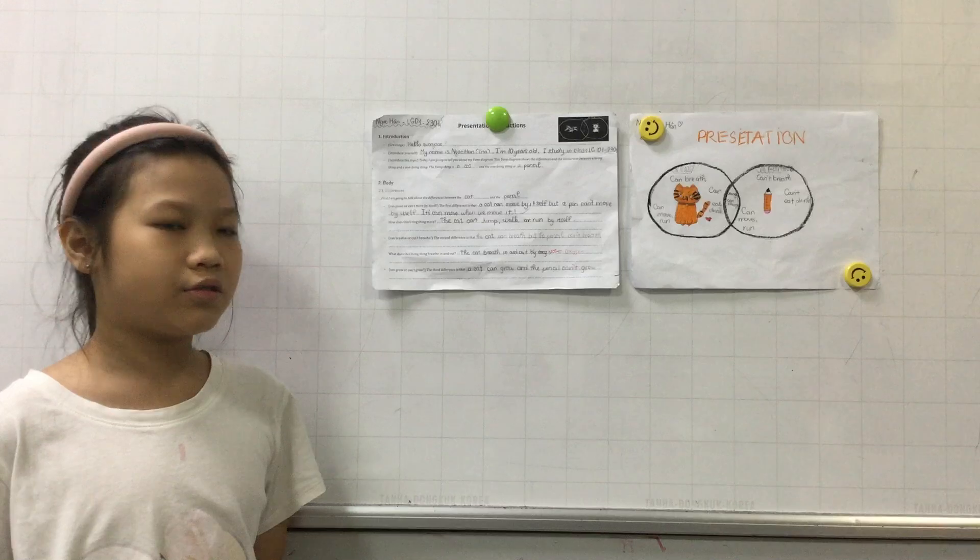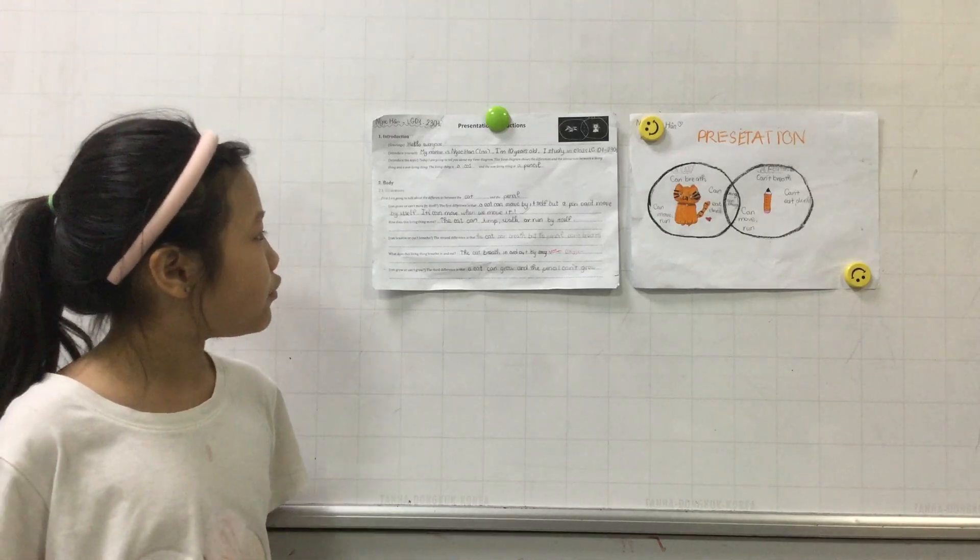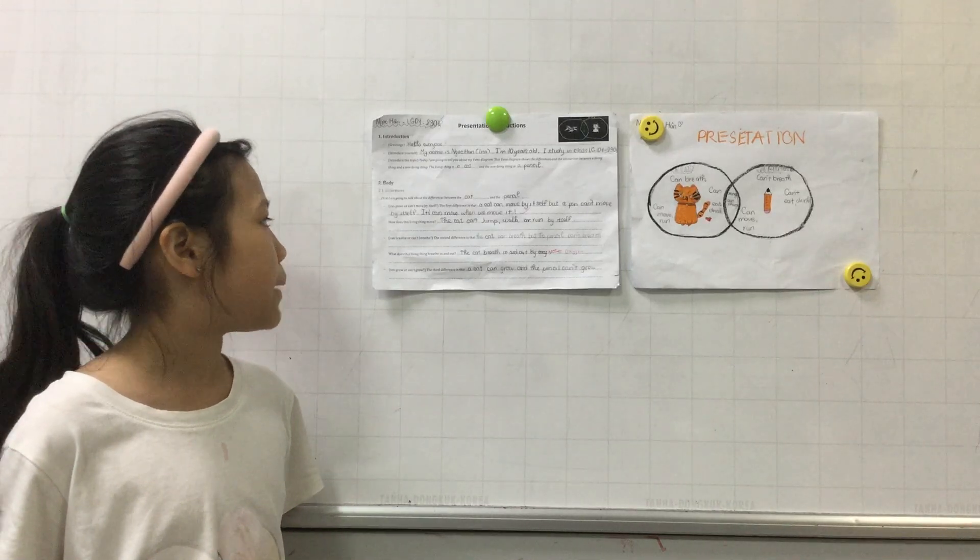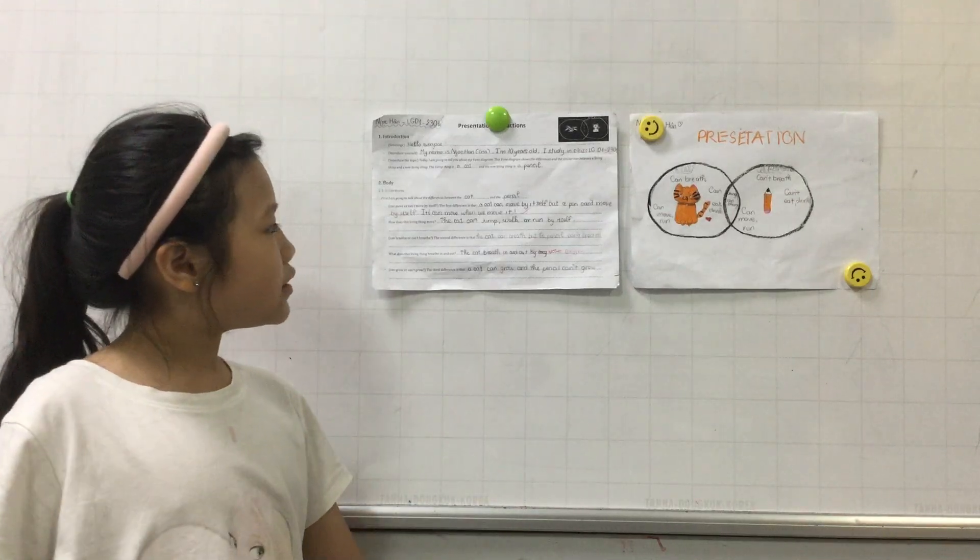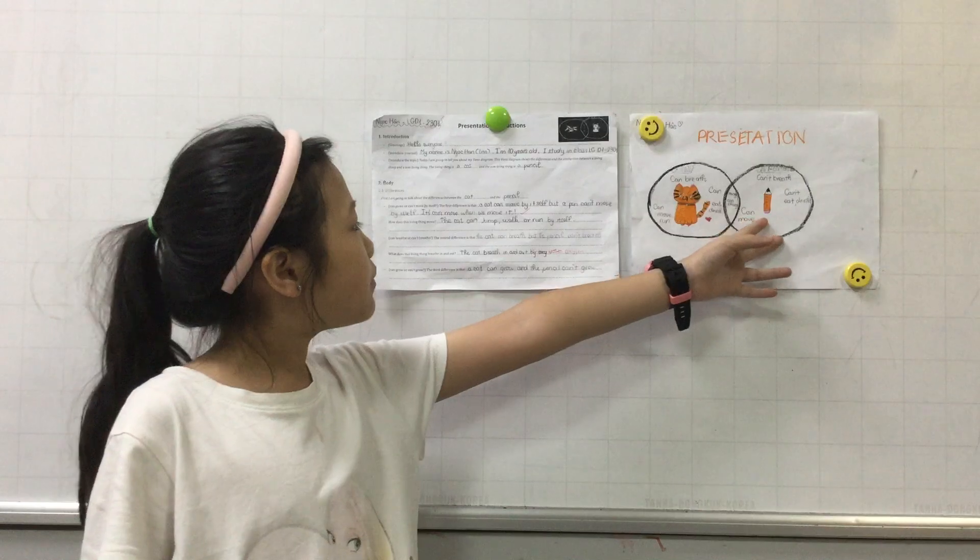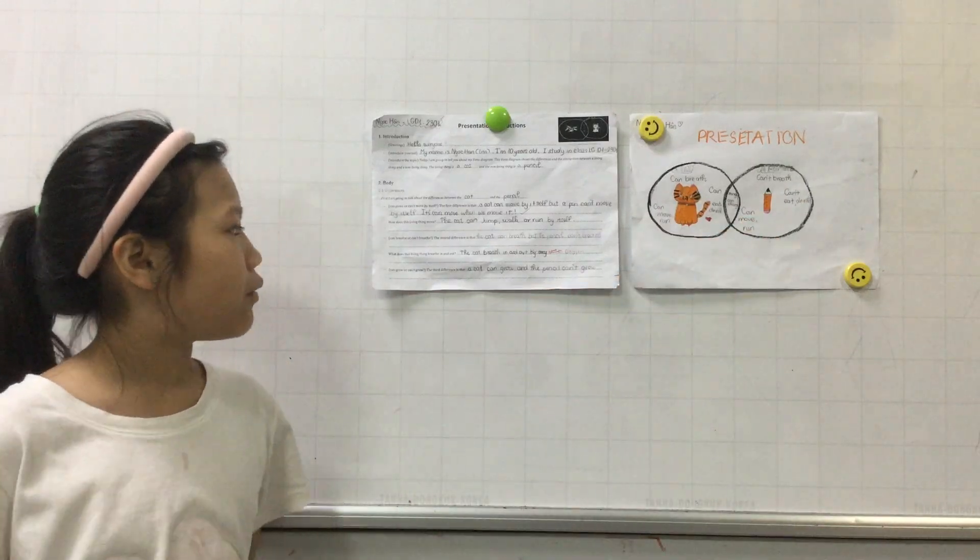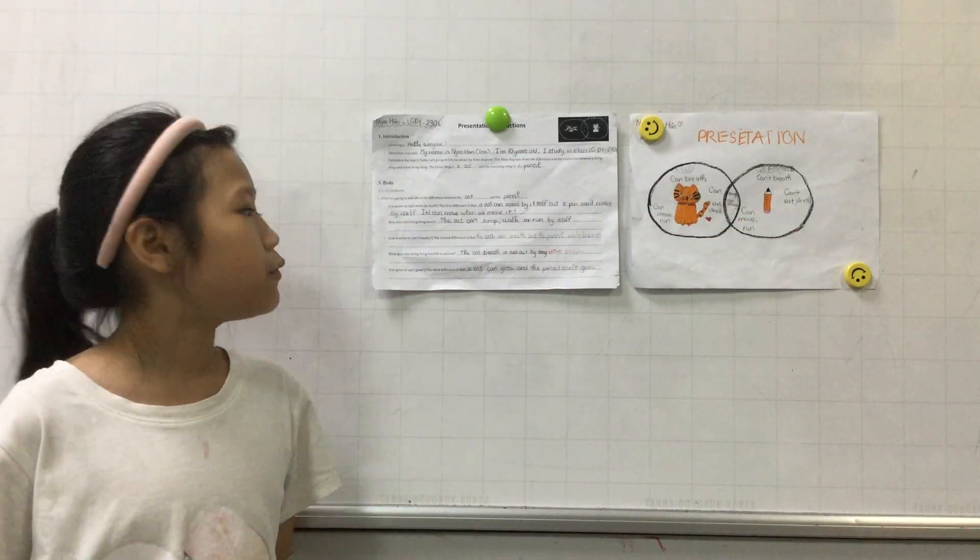First, I am going to talk about the difference between the cat and the pencil. The first difference is that the cat can move by itself, but the pencil can't move by itself. It can move when we move it.